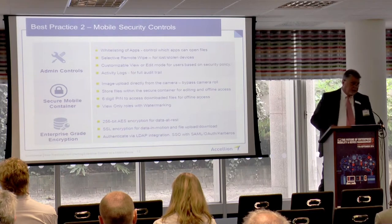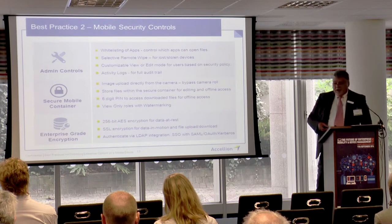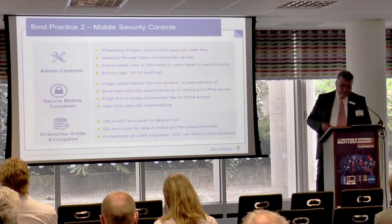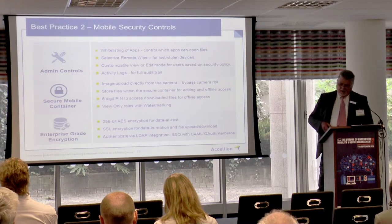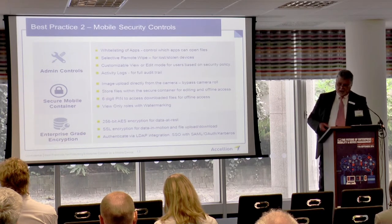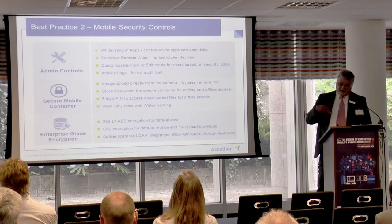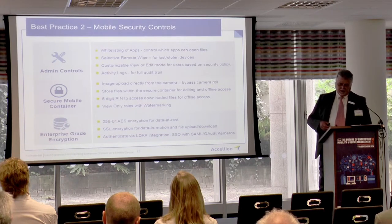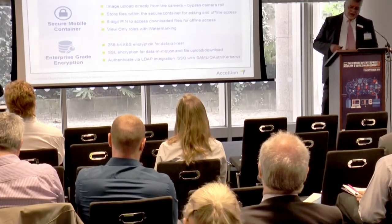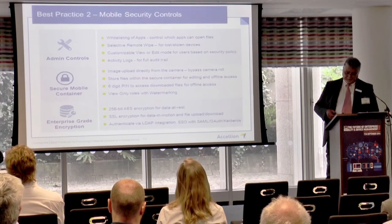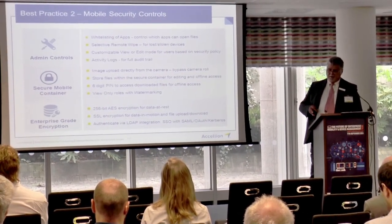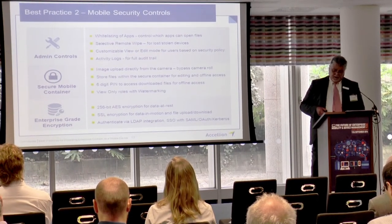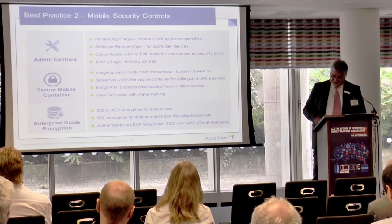Best practice two: mobile security controls, which I've broken into three main areas. First, whitelisting of apps — this predominantly used to fall within MDM or EMM type solutions. However, there are organisations that don't have or don't intend to have an EMM system. So if you are providing a system that allows content to be downloaded, you want to be able to control the apps that can access that information — things like Evernote that will immediately share the content of a document to a public cloud. You want the capability to remove information from a mobile device even if it's been downloaded, so a selective remote wipe is a must-have. You also need to be able to control who has access if a device is lost or stolen.